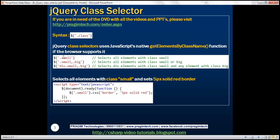We have a few examples here. Notice within the first function, we are passing 'small' as the CSS class name, so this is going to find all elements with that class. The second example is going to find all elements with class 'small' or class 'big'. And the third example is going to find all div elements with class 'small' and any element with class 'big'.